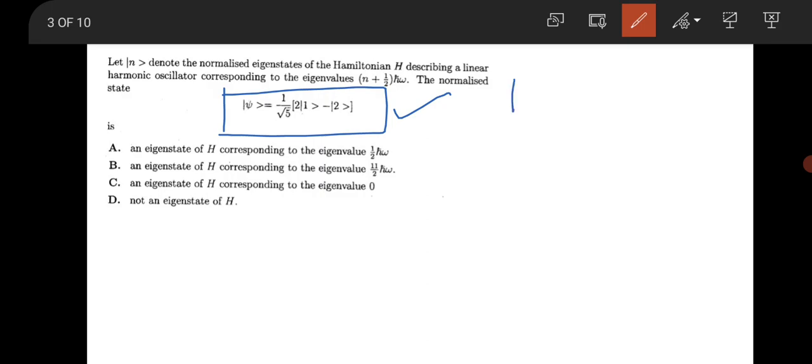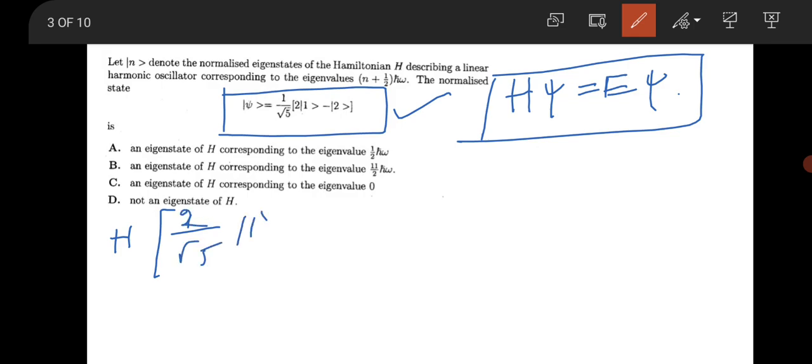You have to check if it is an eigenfunction of Hamiltonian, then it should obey this relation that E should be the energy eigenvalue. Now operate H over ψ. H over ψ means 1/√5, or make it 2/√5 over first state minus 1/√5 over second state. As you know, energy is given (n + 1/2) ℏω.